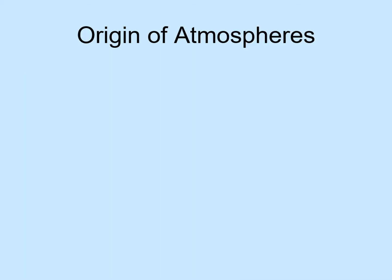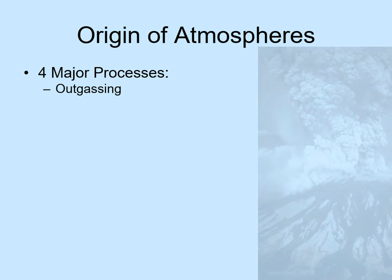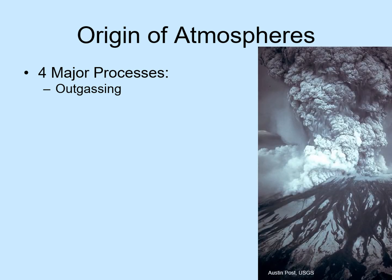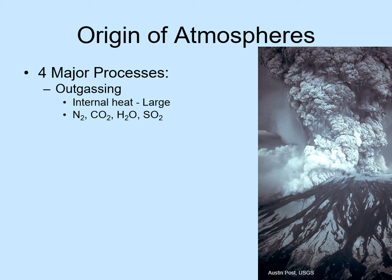Where do the gases in an atmosphere come from? There are at least four different ways gas can be added to a planet's atmosphere. The first way to add gas is through outgassing — this is what an atmospheric scientist calls volcanism. As we already know, volcanism depends on the planet's internal heat, so outgassing will be most important in worlds that have a lot of internal heat — in other words, large, geologically active worlds with solid surfaces. There are many gases that can be produced by outgassing, including nitrogen, carbon dioxide, water vapor, and sulfur dioxide.